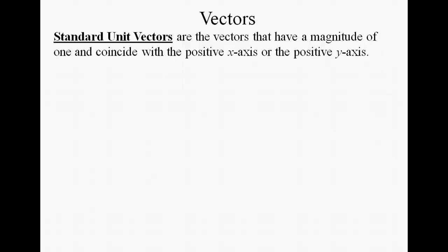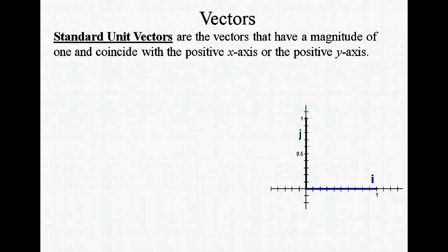A standard unit vector is a vector that has a magnitude of 1 and coincides with the positive x-axis or the positive y-axis. So we have two of these vectors, one that runs along the horizontal, and that one we call i, and the other one that runs vertically, which we call j.